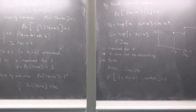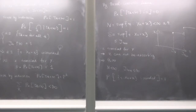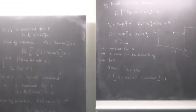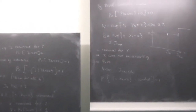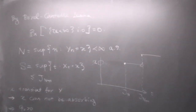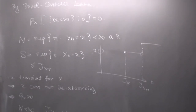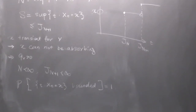So the continuous time Markov chain is transient or recurrent if and only if the jumping process is transient or recurrent. Now irreducibility and transience/recurrence are defined the same way as in discrete time. Next we talk about stationary measures, where the continuous and discrete time cases differ.